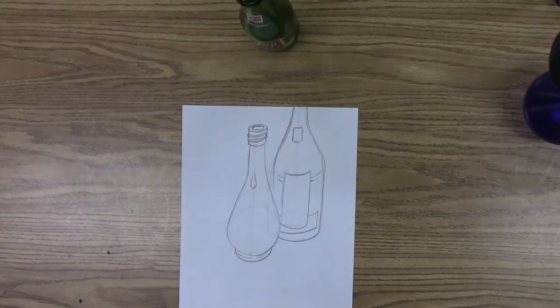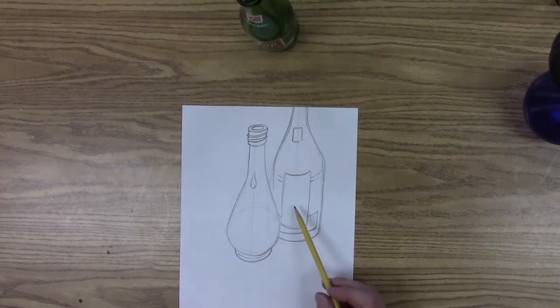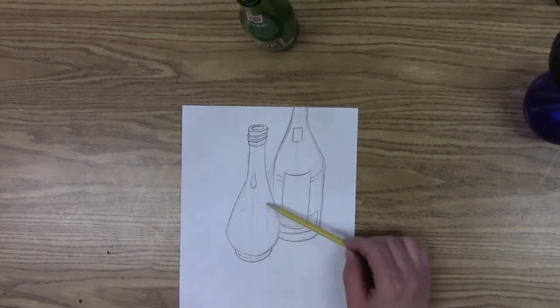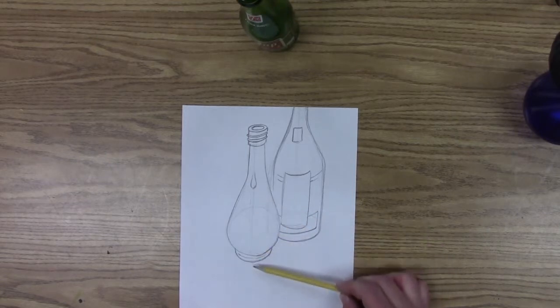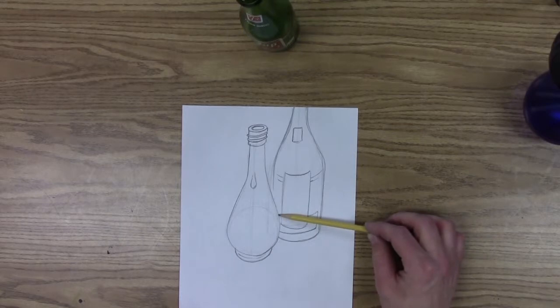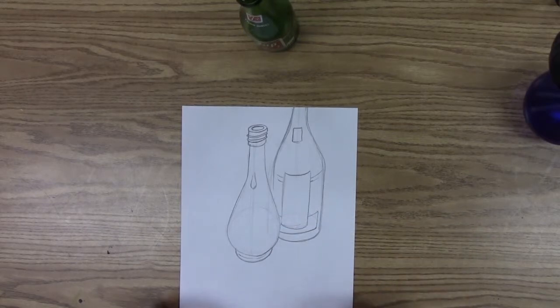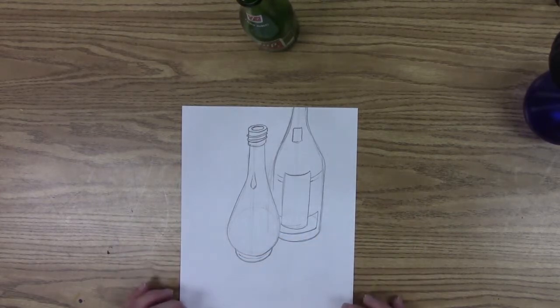A couple things I just want to point out on my sketch that I've done so far, and things that you can do as well. You'll notice that this bottle is in front of this bottle. I know that because there's not only overlap here, but it's also lower on the picture plane. If I had this bottle being overlapped behind this one but lower, it would not look quite right. So the items that are closer to you should be further down on the page.